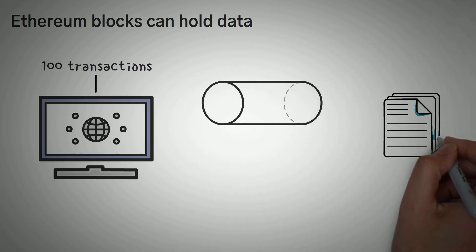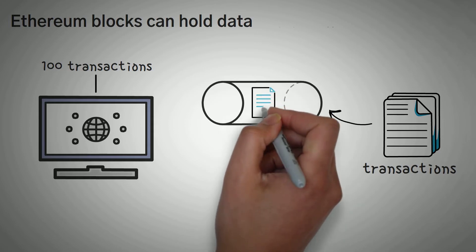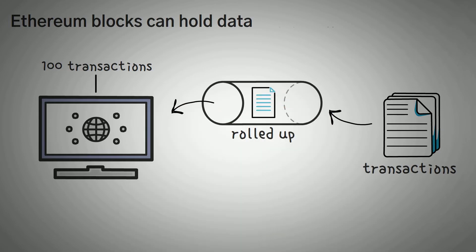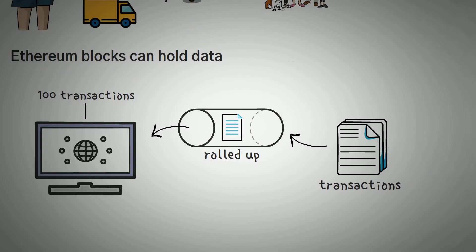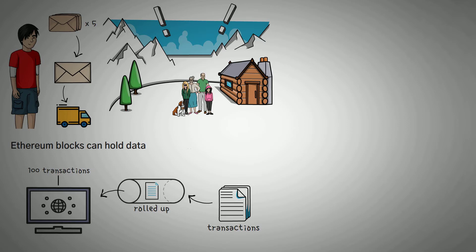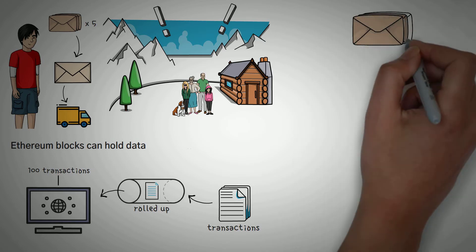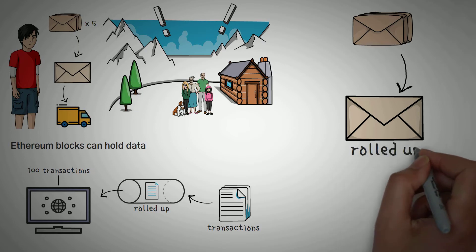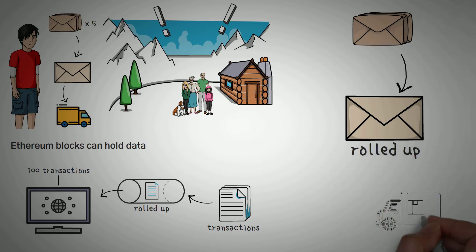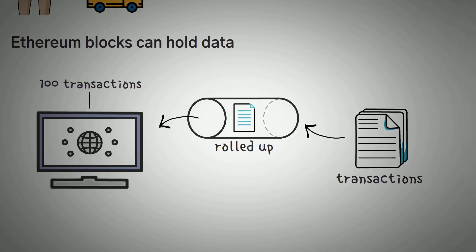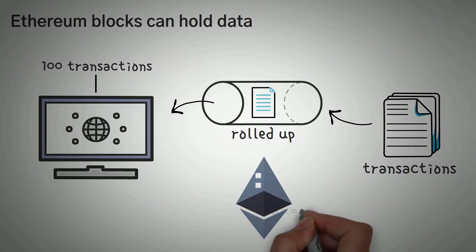Rollups are literally rolling up a bunch of transactions and then turning them into one piece of data to submit to the blockchain, instead of a bunch of singular entries, which saves a bunch of space. That's why we used the sending letters to your Alaskan family example in the intro. Instead of having the mail carrier do the work 5 different times, we only have them do it once. This is what allows Ethereum to scale.